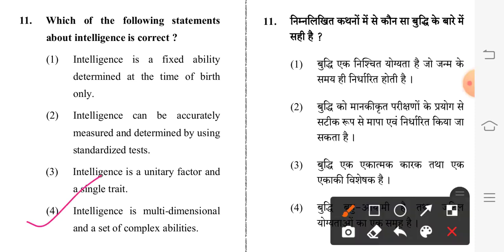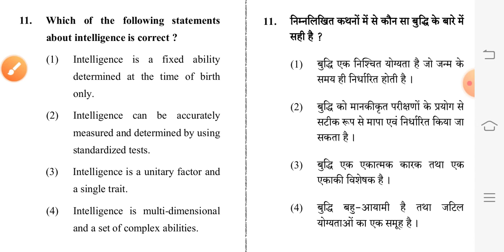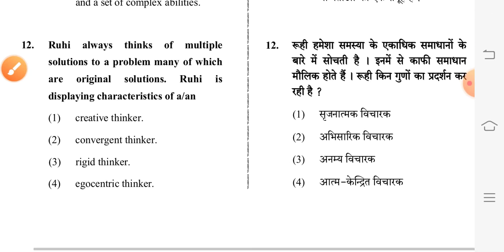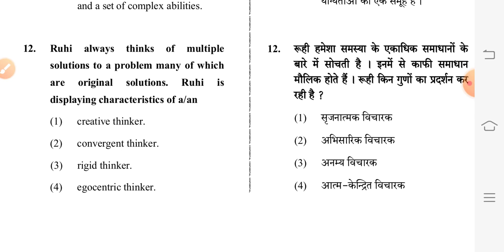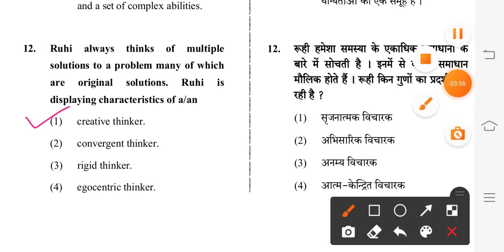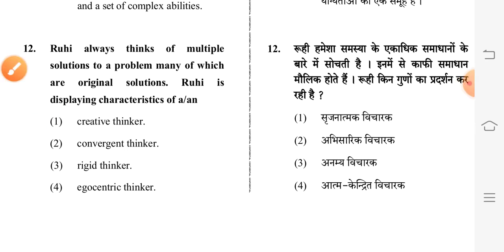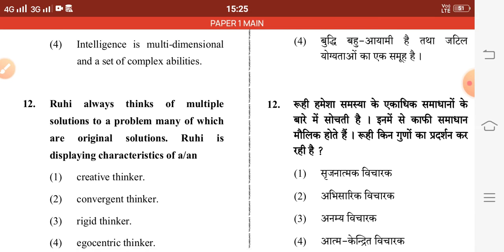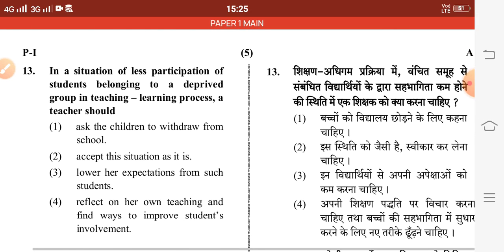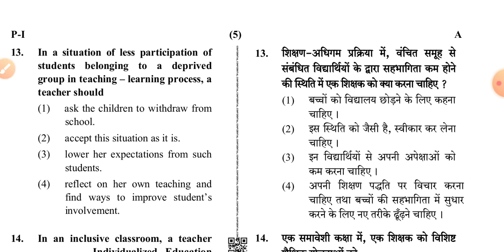Fourth option is correct: intelligence is multi-dimensional and a set of complex abilities. Next question: Roohi always thinks of multiple solutions to a problem, many of which are original solutions. Roohi is displaying characteristics of — first option: a creative thinker.